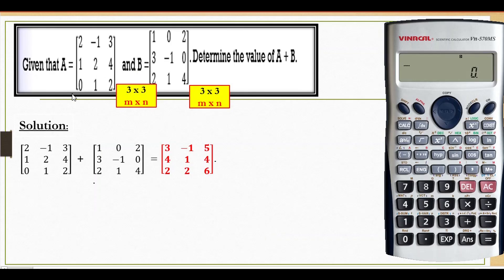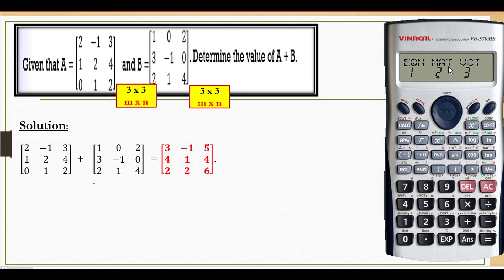Given matrix A and matrix B, determine the value of matrix A plus matrix B. First of all, press mode and you see MAT — press number 2. Okay, then press shift MAT, so number 4. Then press DIM for you to insert the matrix.